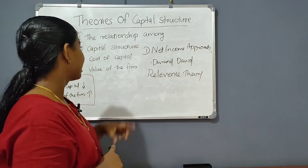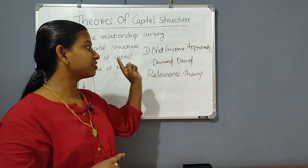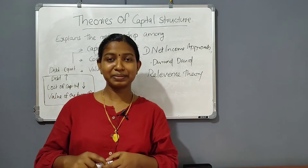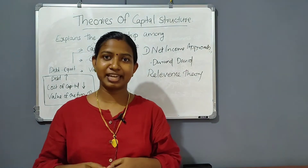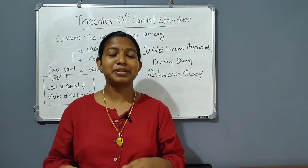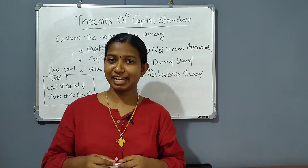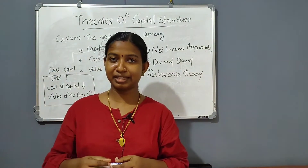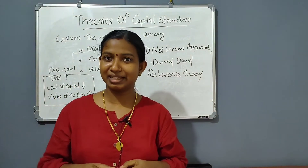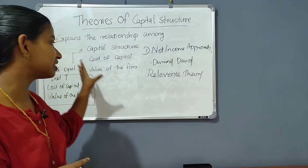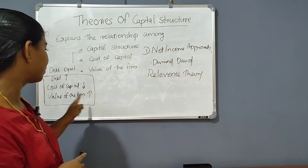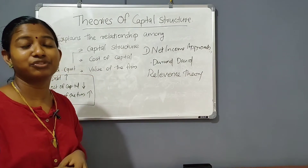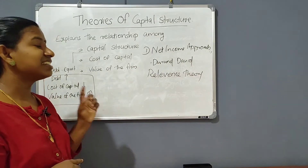The first capital structure theory is the Net Income approach. What is the use of a debt fund with equity capital? In a business organization, a debt fund and equity capital is used in the process of trading on equity. If a debt fund is not used, we say that financial leverage is low, which means there is no leverage. Financial leverage affects the value of the firm and market value of the firm. This is the Net Income approach.